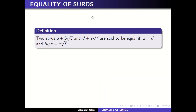So let's start with today's topic: equality of surds. Definition: two surds a plus b square root of c and d plus e square root of f are said to be equal if and only if a equals d, c equals f, and b equals e. In other words, if you say two surds are the same, then the rational parts are equal and the irrational parts are equal.